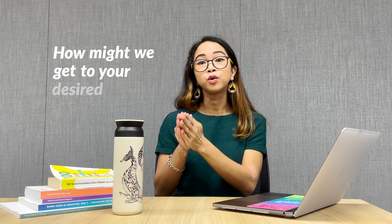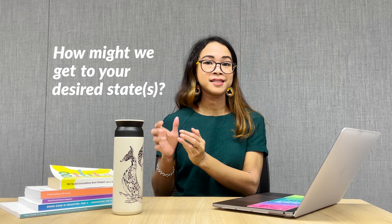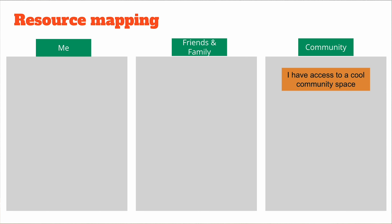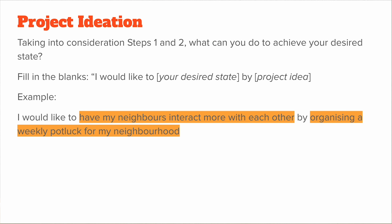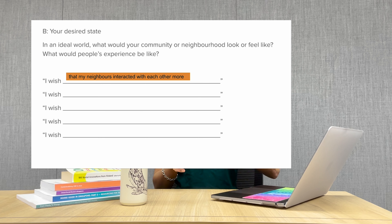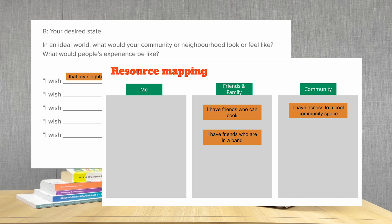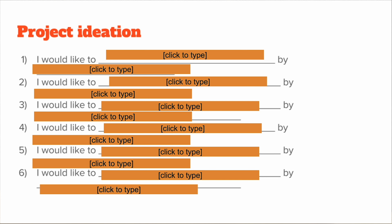You might also want to think about your resource mapping exercise to guide your ideation. Let's say that you've identified that you have access to a cool common area in your neighborhood, and you also identified that you have friends who can cook and friends who love to entertain — they're in a band. What if you organized a weekly potluck for your neighbors to interact more with each other? That's an idea already. Using your desired state, plus the resources that you have mapped, you can come up with several ideas to achieve your desired state.